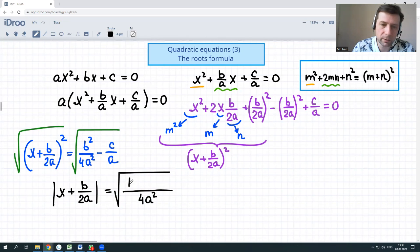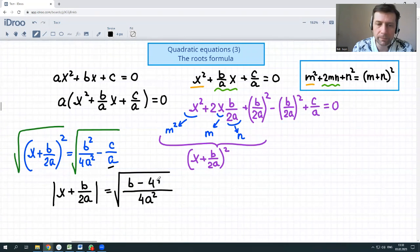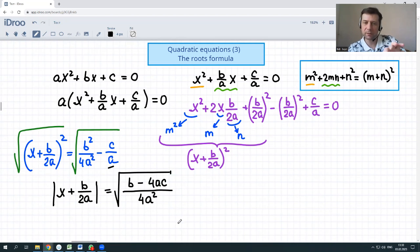Then b squared minus—what should we multiply c by? By 4a, right? Because we have only a here, but we have to make it 4a squared, which means we multiply by 4 and multiply by a: 4ac. I think you've already noticed what kind of shape we've got here. It's very similar to the roots formula.